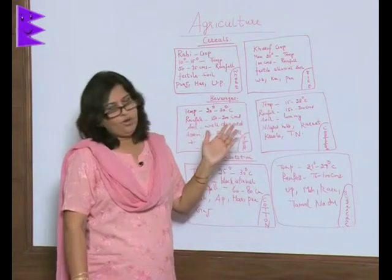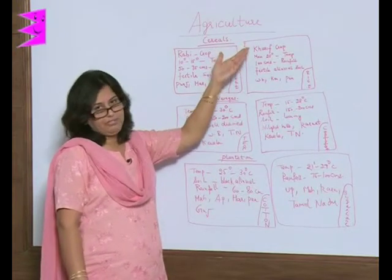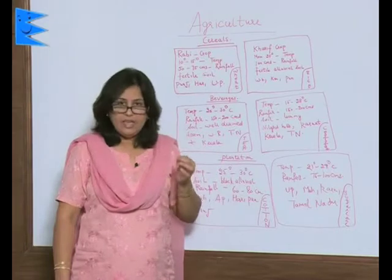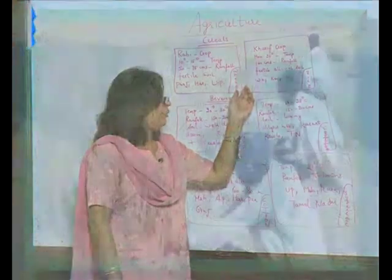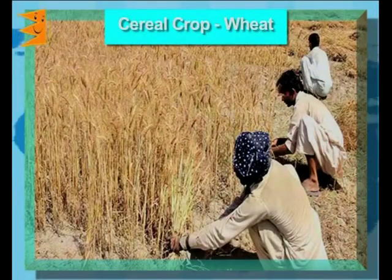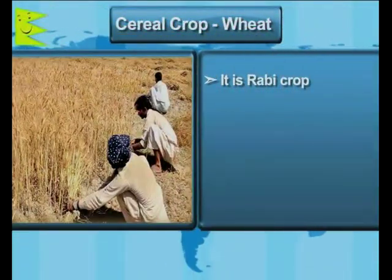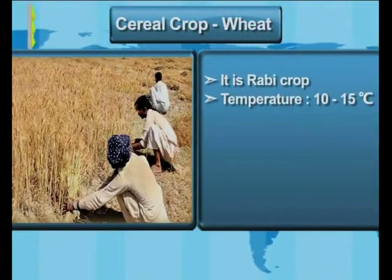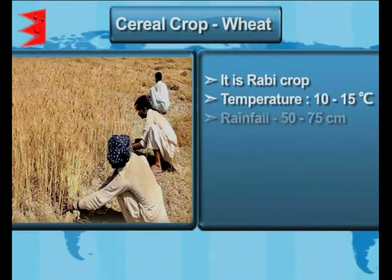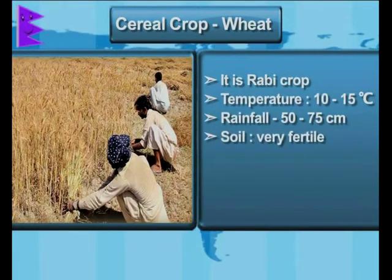Let's talk about the cereal crops of India. The two main cereal crops are wheat and rice. Let me talk about wheat — it's a rabi crop. The temperature required is 10 to 15 degrees centigrade and the rainfall is 50 to 75 centimeters.